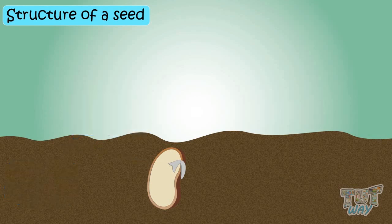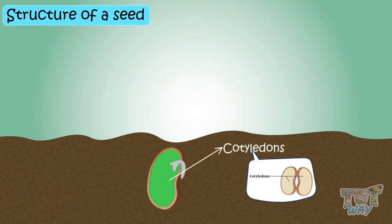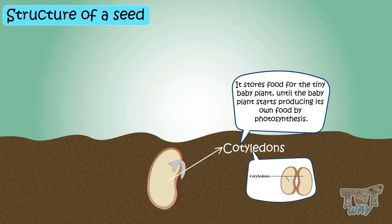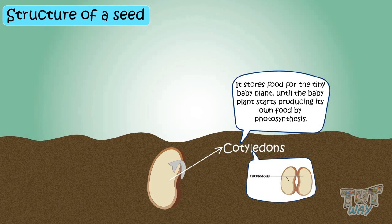The part of the seed inside the testa that stores food for the tiny baby plant until it starts producing its own food by photosynthesis is called the cotyledon. There can be one or two cotyledons.